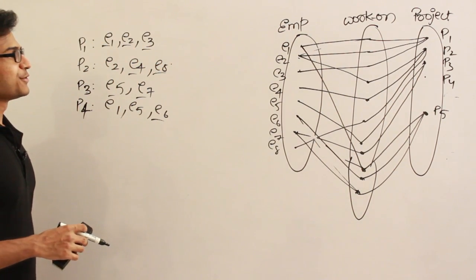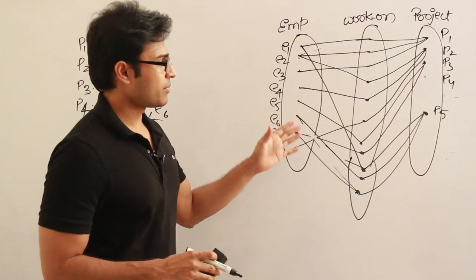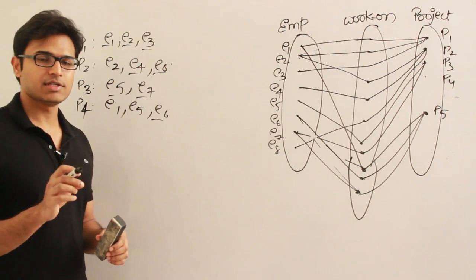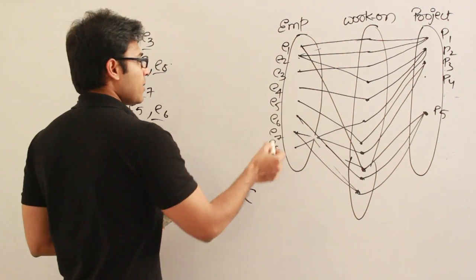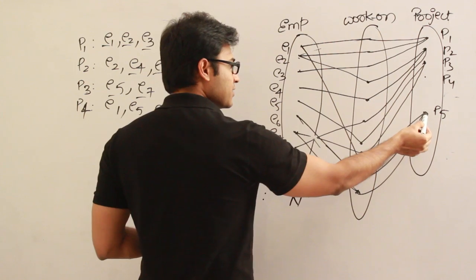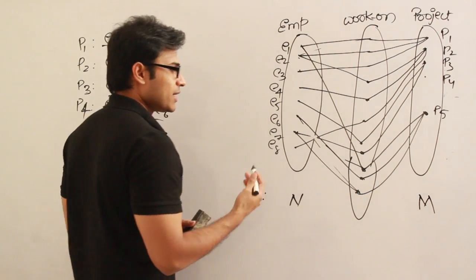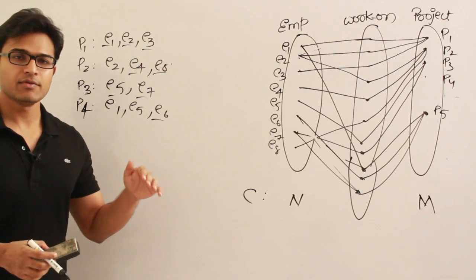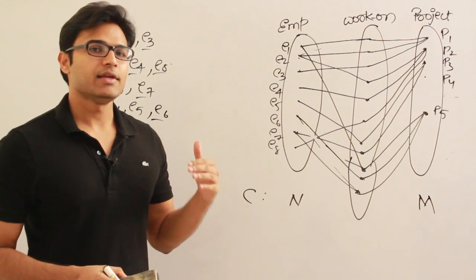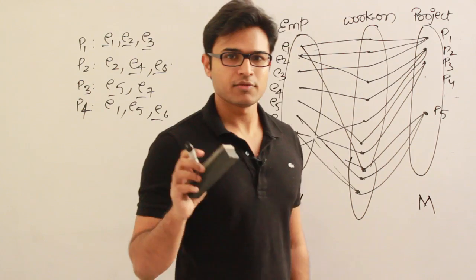That is how the relationship set looks. Now let's talk about the degree: degree is the number of entities participating in each relationship — two entities, therefore the degree of this relationship is two. What about cardinality? Cardinality is the maximum number of relationships in which each entity can participate. On the employee side, each employee can participate in many relationships. Similarly, each project can participate in many. Therefore you write N and M — using N and M instead of N and N to avoid confusion about equal cardinality. N and M indicate anything greater than one, meaning they can participate in more than one relationship.